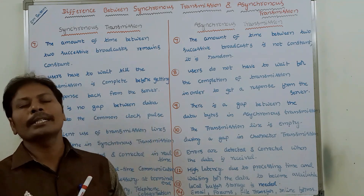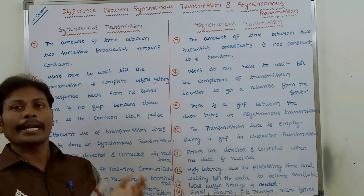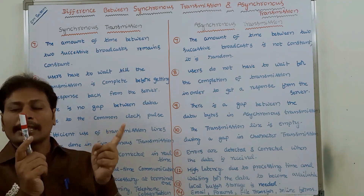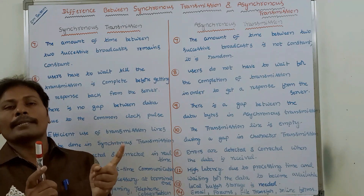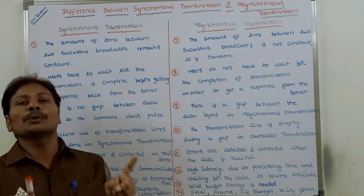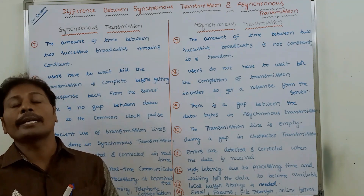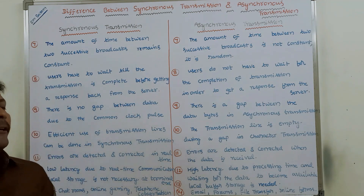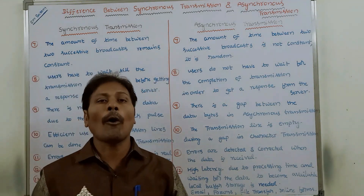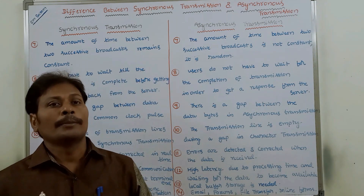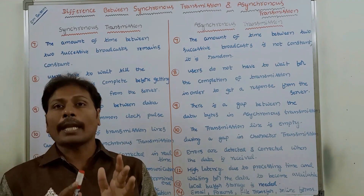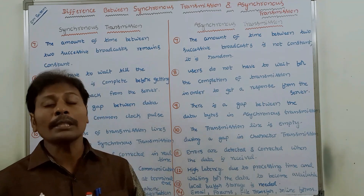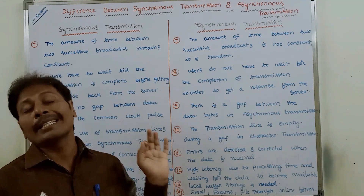We send one data transmission, then another data transmission, and the time gap between the two remains constant in synchronous transmission. Whereas in the case of asynchronous transmission, the amount of time between two successive transmissions is not constant — it is random.